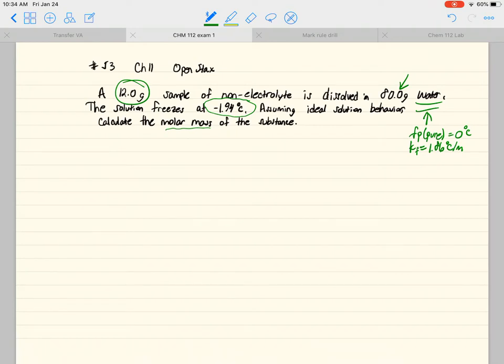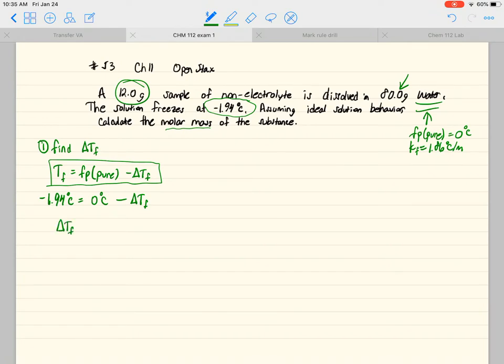Let's go ahead and do the calculations. First, what we want to do is find the change in the freezing point, not the actual freezing point. The formula we use is: Tf of the solution equals the freezing point of the pure minus the change in temperature of the freezing point. Here we know the solution freezes at negative 1.94°C, pure water freezes at zero, and we want to solve for the change. So the change is equal to positive 1.94 degrees Celsius.